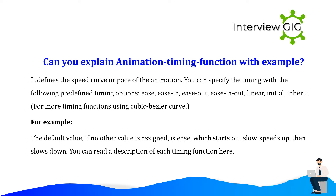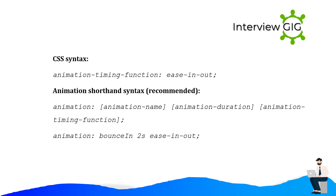Can you explain the animation timing function with an example? It defines the speed curve or pace of the animation. You can specify timing with predefined options: ease, ease-in, ease-out, ease-in-out, linear, initial, inherit. For more timing functions, use a cubic-bezier curve. For example, the default value — if no other value is assigned — is ease, which starts out slow, speeds up, then slows down. CSS syntax: animation-timing-function: ease-in-out;. Animation shorthand syntax (recommended): animation: bound-sign 2s ease-in-out;.